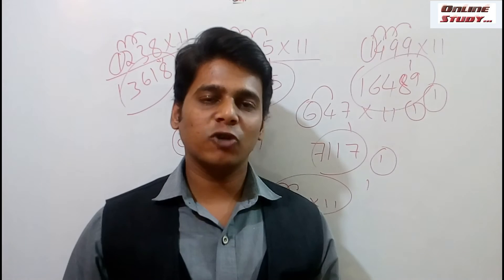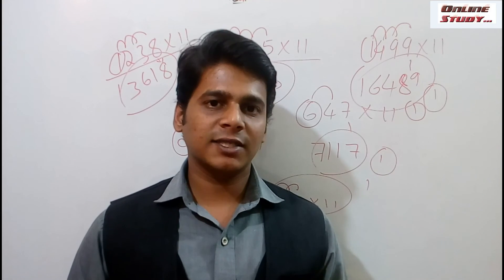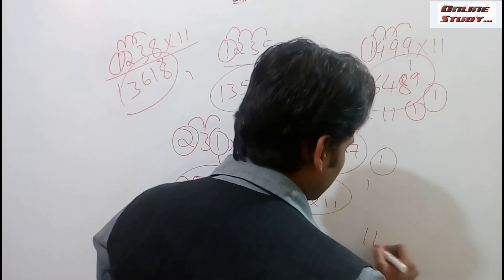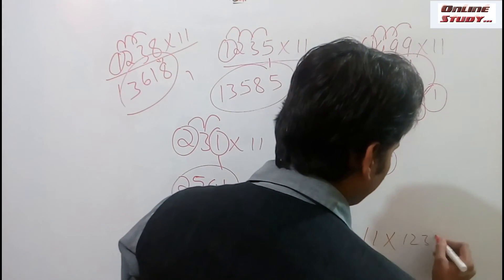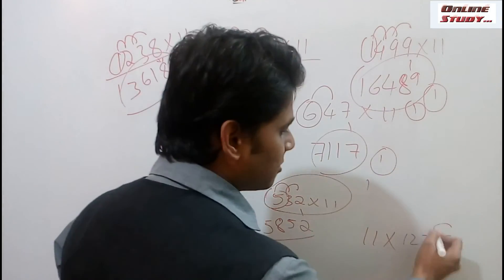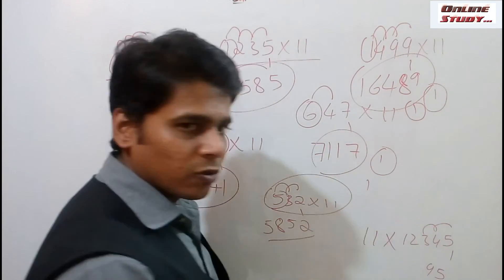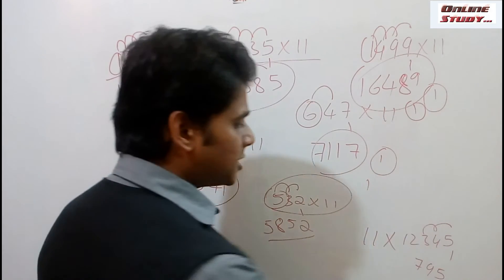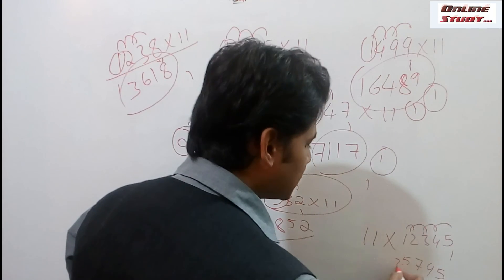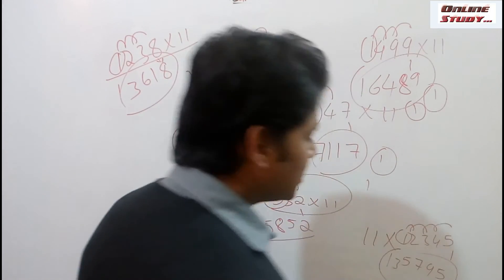Multiplication with any number of digits is quite simple. As we have seen with 2, 3, and 4 digits, we can also do 5-digit multiplication. For example, 11 into 12345: first place 5 as it is. Next step is 5 plus 4, that is 9. Next step is 3 plus 4, that is 7. Next step is 3 plus 2, that is 5. And the next step is 2 plus 1, that is 3. Place 1 as it is. So the multiplication of 11 into 12345 is 135795.